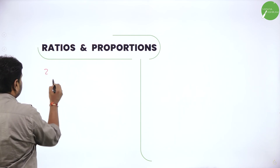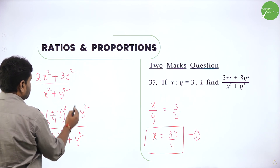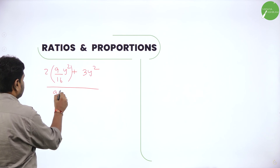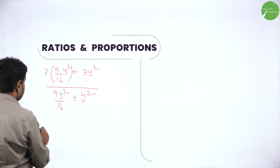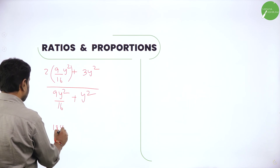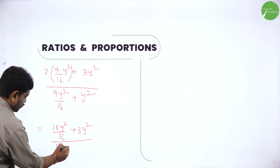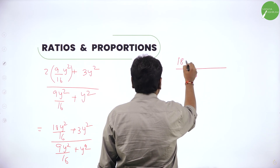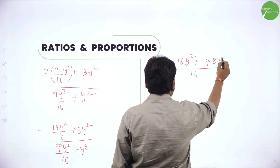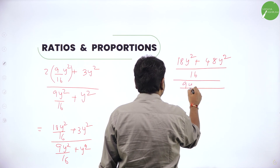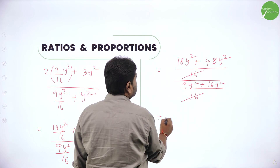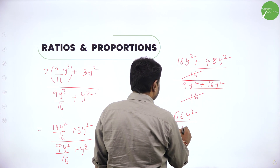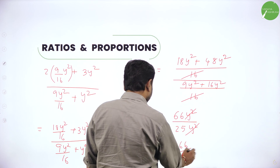Substituting x equals 3y/4 into (2x² + 3y²)/(x² + y²): numerator becomes 2 into (3/4)² y² plus 3y² = 2 into 9/16 y² plus 3y² = 18y²/16 plus 3y². Taking LCM 16 in numerator: 18y² plus 48y² = 66y². Denominator: 9y²/16 plus y², taking LCM 16: 9y² plus 16y² = 25y². Cancel y²: result is 66 by 25.